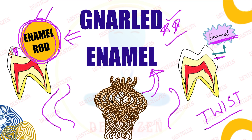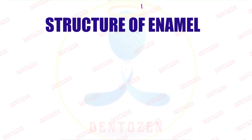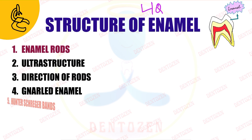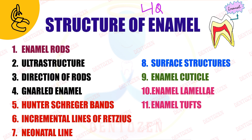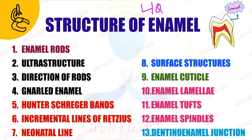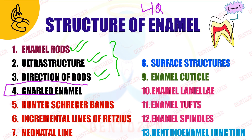Gnarled enamel can be a short note or part of a long question on the structure of enamel. We are going to cover all these topics one by one in videos. We have already discussed enamel rods, their structure, ultrastructure, and direction of rods in the previous three videos. In today's video we are going to discuss the fourth part of this long question, that is gnarled enamel.